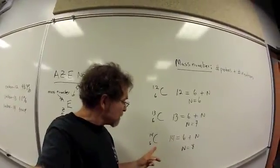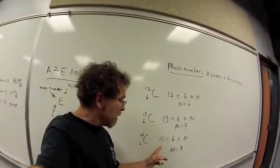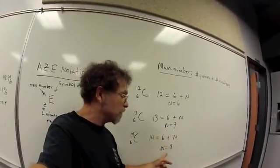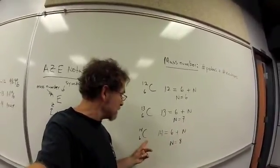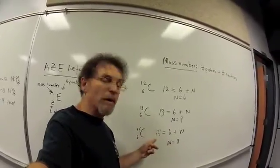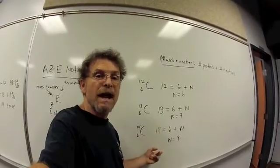Finally, we look at C-14. We set up our equation. 14 is equal to 6 plus N. We solve for the N. We see that C-14 has actually got 8 neutrons. So of the three isotopes of carbon, C-14 is the heaviest.